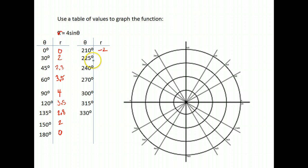And the sine of 225 is negative 0.7 times 4 is negative 2.8.